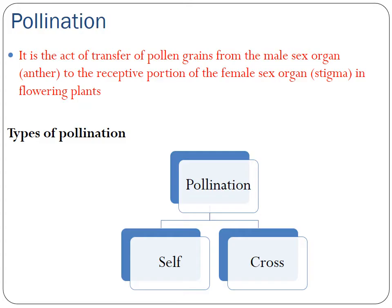Pollination is an act of transfer of pollen grains from the male sex organ, i.e. anther, to the receptive portion of the female sex organ, i.e. stigma, in flowering plants. There are different types of pollination, mainly self-pollination and cross-pollination.